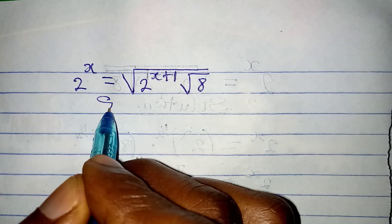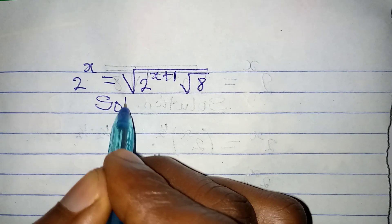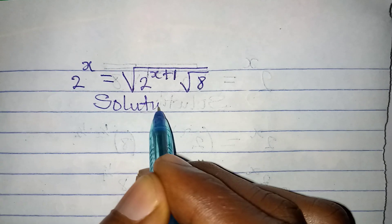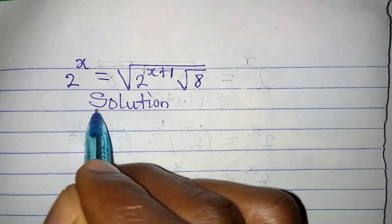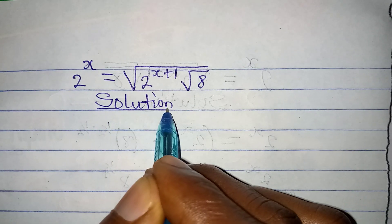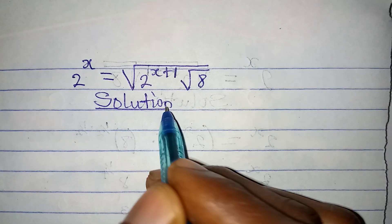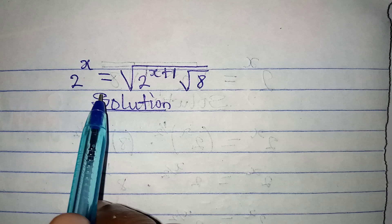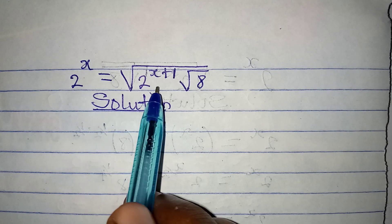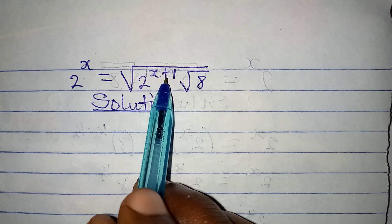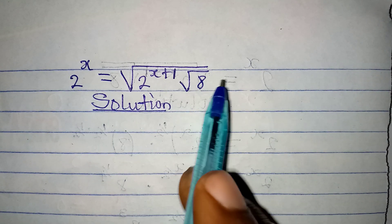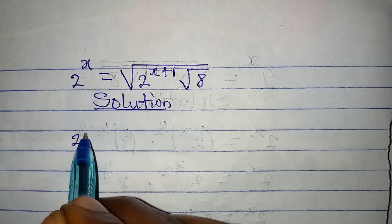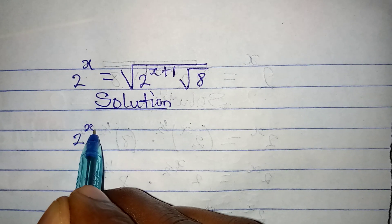Hello everyone, let us solve this problem very quickly. We have 2 to the power of x equal to the square root of 2 to the power of x plus 1, times the square root of 8.